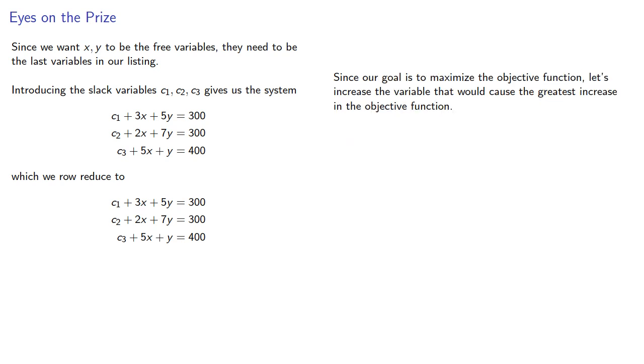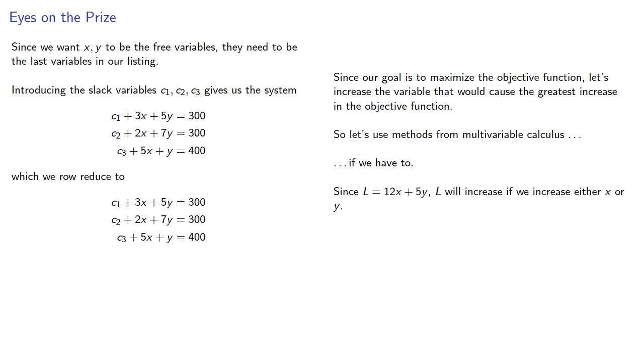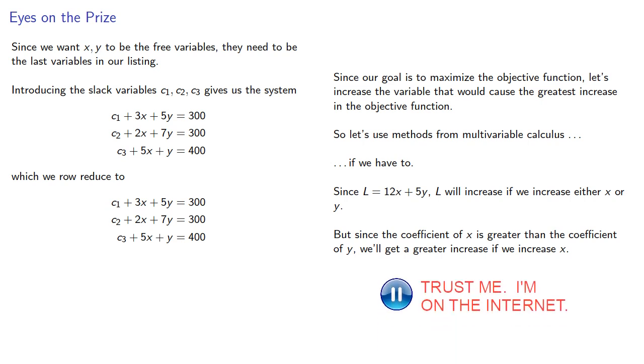Since our goal is to maximize the objective function, let's increase the variable that would cause the greatest increase in the objective function. So let's use methods for multivariable calculus if we have to. But remember, the value of calculus is converting nonlinear problems into linear problems. In this case, since l equals 12x plus 5y, l will increase if we increase either x or y. But since the coefficient of x is greater than the coefficient of y, we'll get a greater increase if we increase x. So let's leave y at zero and increase x.